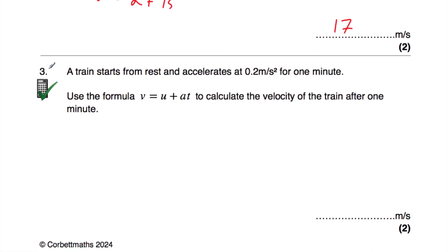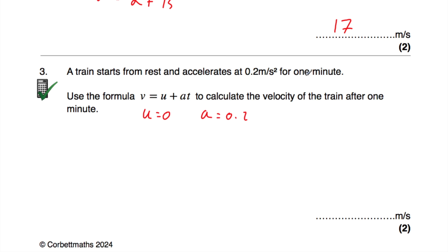Question number 3 is a calculator question. We're told that the train starts from rest — that's quite important — so the train isn't moving to begin with, meaning u, the initial velocity, is equal to 0. It accelerates at 0.2 metres per second squared for one minute. So a equals 0.2 metres per second squared. One minute is 60 seconds — the acceleration is given in seconds so we work in seconds — so t equals 60 seconds.